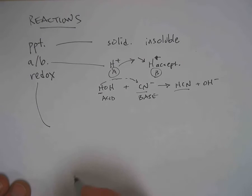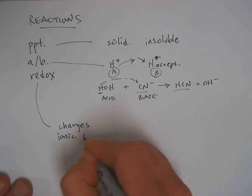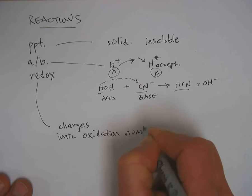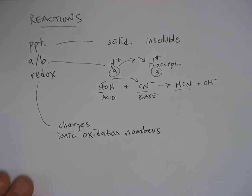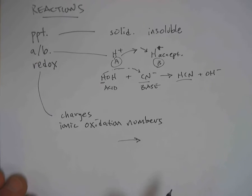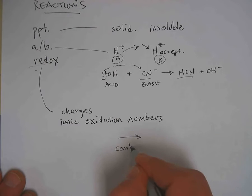The third type of reaction is known as a redox reaction, and this is where the charges, or ionic oxidation numbers, change from one side of the reaction, called the reactants, to the other side.